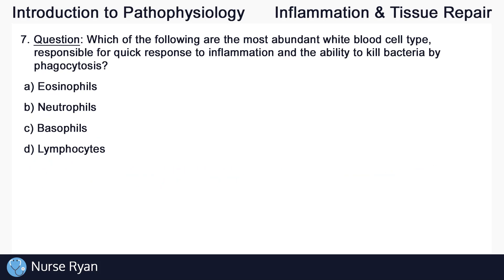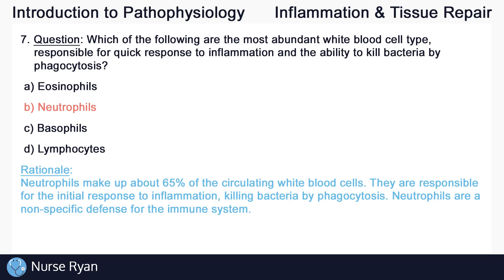Question number seven: which of the following are the most abundant white blood cell type responsible for quick response to inflammation and the ability to kill bacteria by phagocytosis? The answer here is B, neutrophils. Neutrophils make up about 65% of the circulating white blood cells. They are responsible for the initial response to inflammation, killing bacteria by phagocytosis. Neutrophils are a nonspecific defense for the immune system.